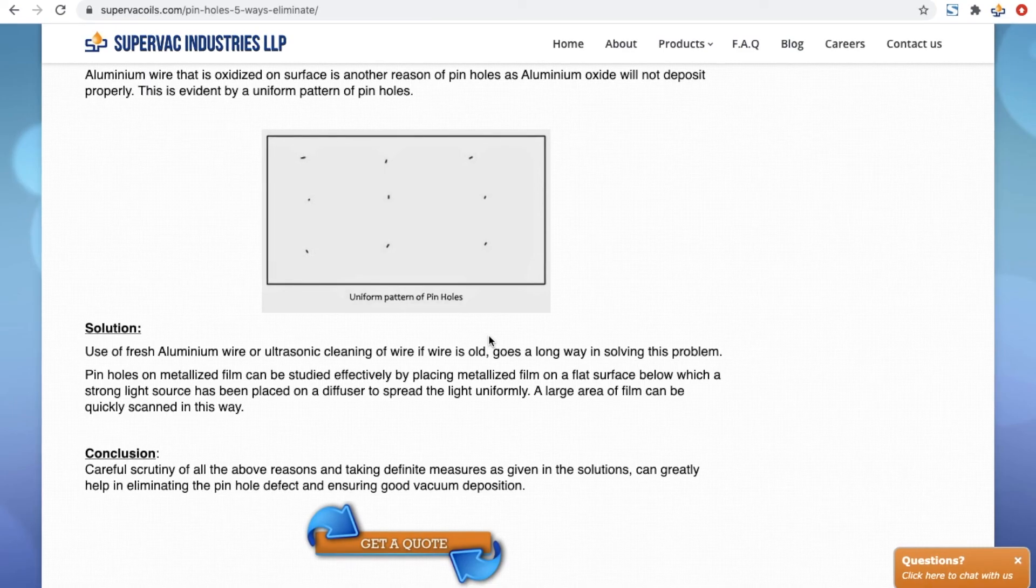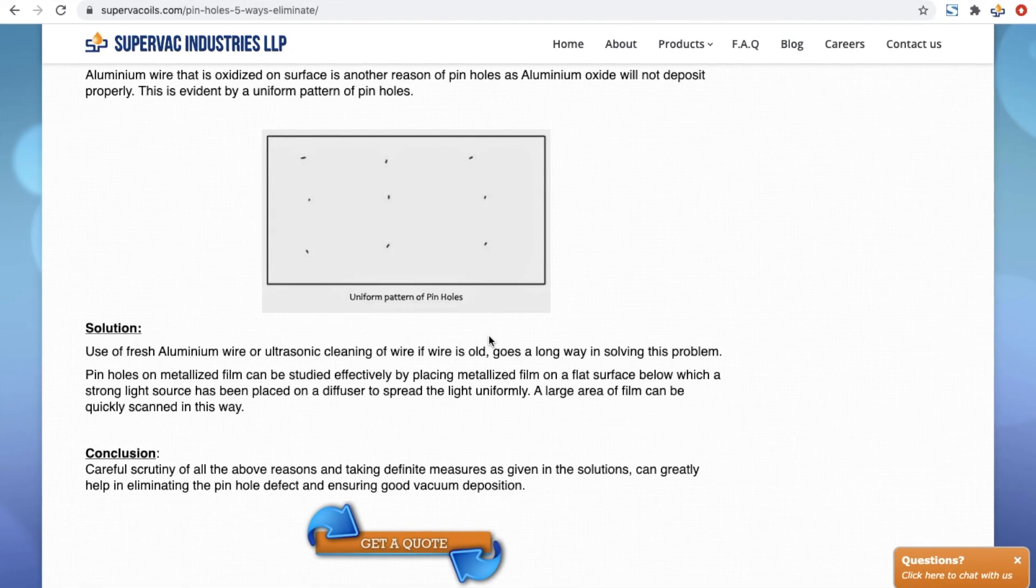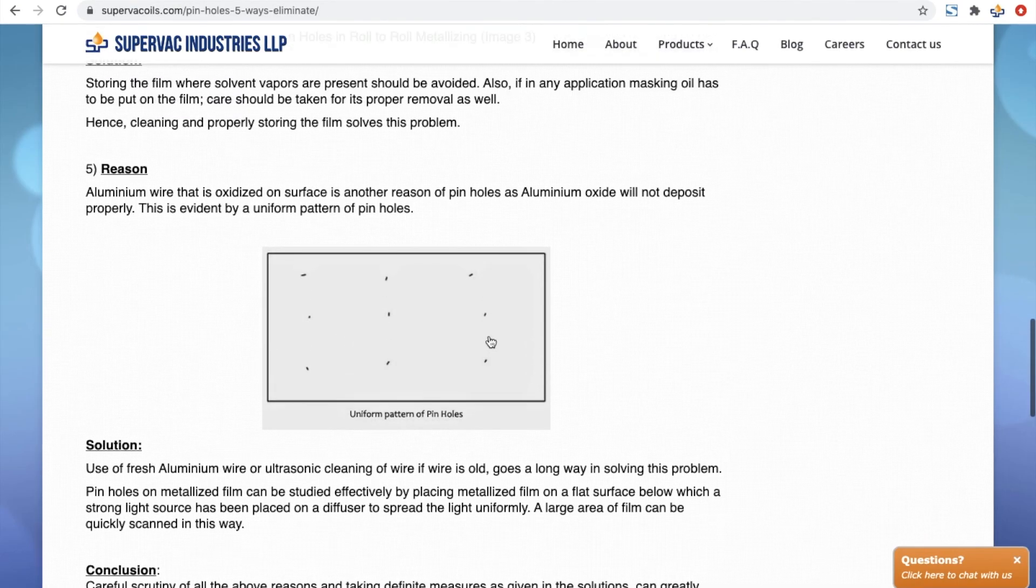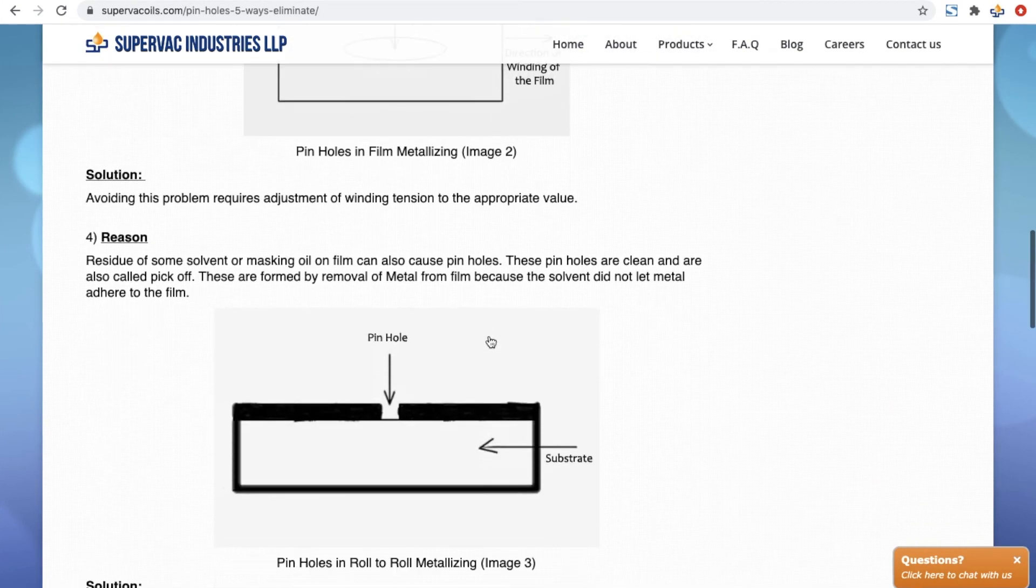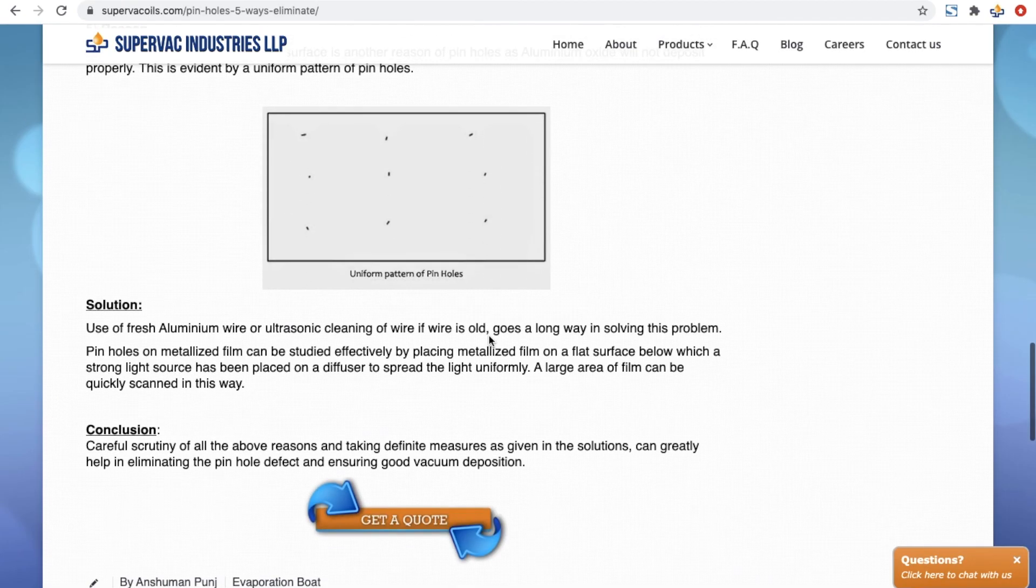This film can very easily be examined by placing it on top of a flat surface. A very strong source of light should be placed under the surface, preferably with a diffuser, so that the light is uniformly spread. By examining it at such a surface, you would very easily be able to identify the reason that was causing the pinholes and once we understand the reason, it becomes easy to eliminate it.